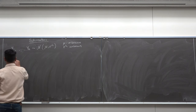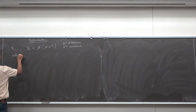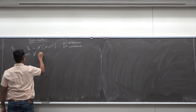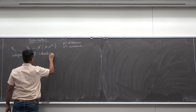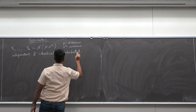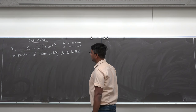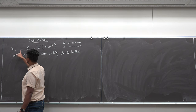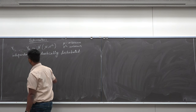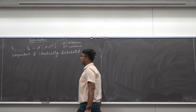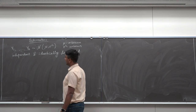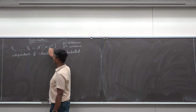These observations are IID — independent and identically distributed. Independent means that y2 has no correlation with y1, y3 has no correlation with y2 and y1, and so on. Identically distributed means their distributions are exactly the same — they are all Gaussian with mean mu and covariance sigma squared.